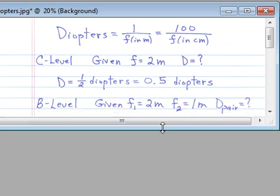Next question, a little more involved. I have two lenses for the B level question. Focal length is 2 meters for the first lens. The second lens is 1 meter, and I need the diopter value for the pair.